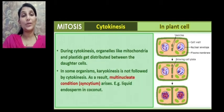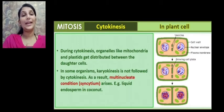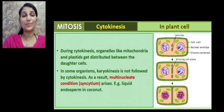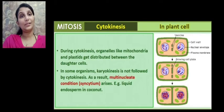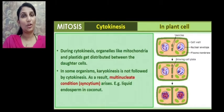The liquid endosperm in the coconut — that is the liquid part of the coconut — is the endosperm. This endosperm has a large number of nuclei, representing the syncytium condition in plants. This multi-nucleate condition is called a syncytium, which is seen in the liquid endosperm of coconut.